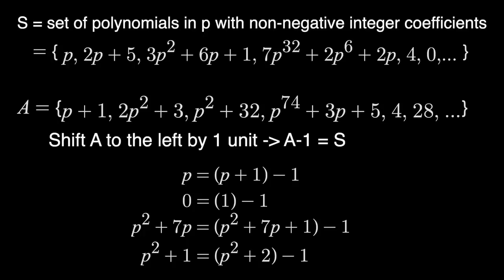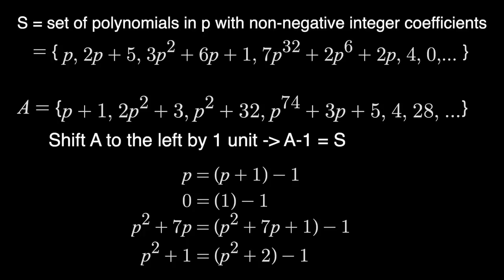Now, moving on to set B, we need to rotate all of these points by one radian, and hopefully get S back. To rotate a set clockwise by one radian in the complex plane is the same as multiplying all of its elements by E to the minus I. Remember, though, that P is E to the I. So, E to the minus I is just P to the minus one. Thus, to rotate B, we are going to multiply all the elements in B by P to the minus one. And this does give us back S.